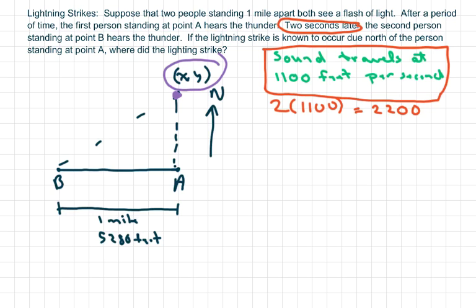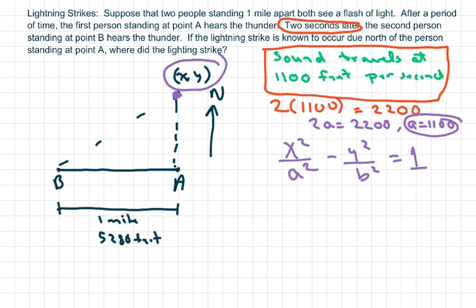Since the difference between the two foci, we have to write a hyperbola equation, which is X squared over A squared minus Y squared over B squared equals 1. Now we know that 2A equals 2200. So my A is 1100 feet. Therefore, A is going to be 1100 right there.